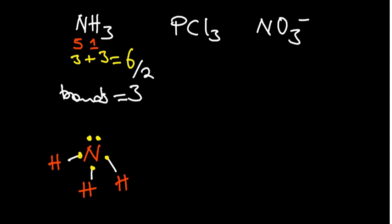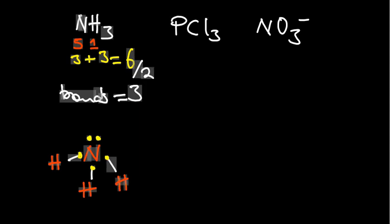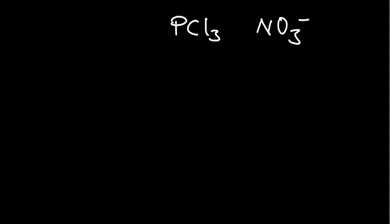We are now on the second structure. We will apply the same rule — we are going to determine the number of required electrons as our first step. Let's look at PCl3 and determine its Lewis structure.